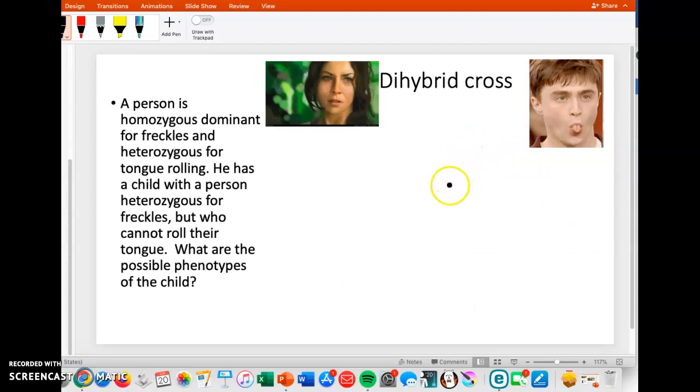The last thing I want to show you with these crosses is a dihybrid cross. This gets more complicated when you want to look at more than one trait. So here, this is two traits, one of them is freckles and one of them is tongue rolling.